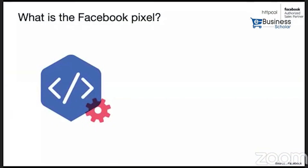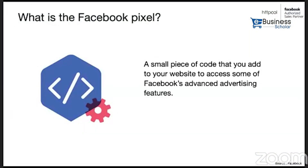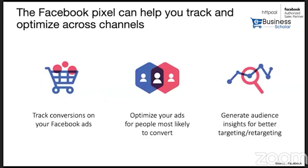So what is Facebook Pixel? It's a small piece of code that you can add to your website to enable Facebook advertising features. It empowers you to track conversions on your Facebook ads, optimize your ads for people most likely to convert, and build audiences from your website visitors. Through the pixel, you can optimize and create lookalike audiences and custom audiences, and generate audience insights for better targeting.